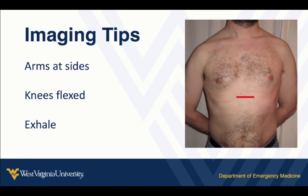We'll do a transverse sweep from the xiphoid. We first identify the aorta and then follow it its whole length in the abdomen from the xiphoid process all the way down until we see it bifurcate into the iliacs. For point-of-care purposes, I really don't think you need longitudinal images unless you see an abnormality on the transverse images.